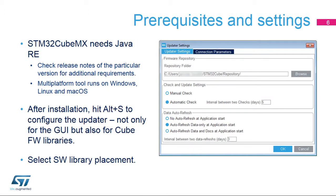Download the STM32CubeMX installer for free from the ST website and install it. Then set your preferences in the settings menu. One menu for the updater and library download, ALT plus S. The other menu for code generation and integration with development tool chains, ALT plus P. Once this setup is completed, a new project can be created.